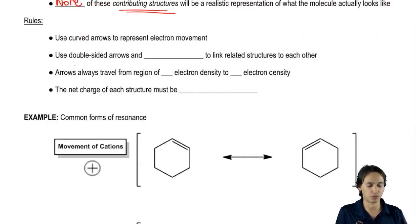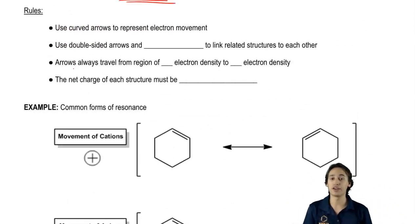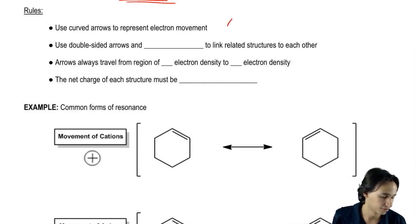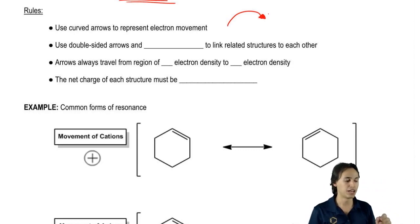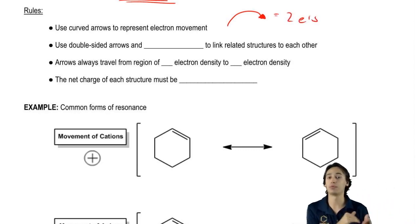Let's go ahead and learn some rules. First of all, we're going to use curved arrows to represent electron movement. These rules are going to apply to the rest of organic chem. We're going to keep using these rules any time that we're moving electrons, which is pretty much all the time. Notice that I'm using a full arrow and I'm curving it around. What that means is that two electrons, that represents two electrons, are moving from one place to another.